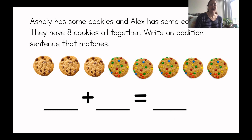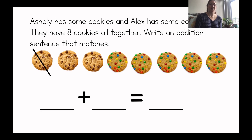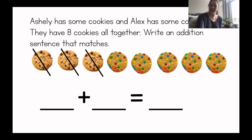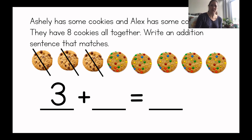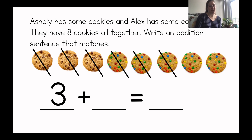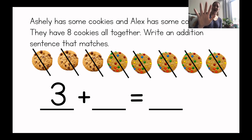All right, let's get started. Count those cookies that Ashley has. Are hers the chocolate chip or the M&M? Yeah, they're the chocolate chip. Let's count Ashley's chocolate chip cookies. One, two, three. So what number do we write on that first line? We write a three for Ashley's three cookies. The M&M ones are Alex's. Now we need to count Alex's cookies. Let's count them. One, two, three, four, five. So Alex had five M&M cookies. So we'll write the five.